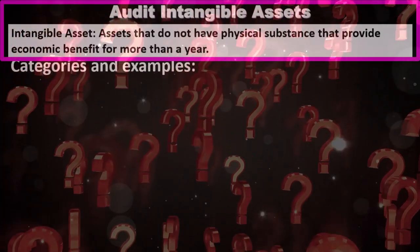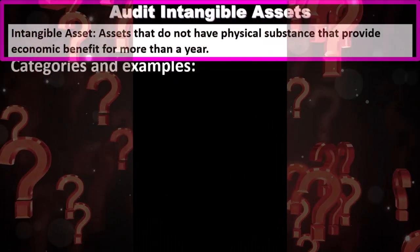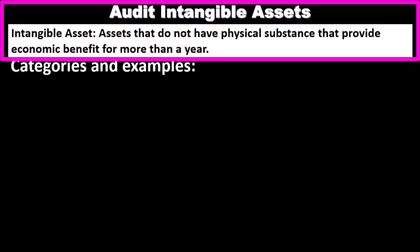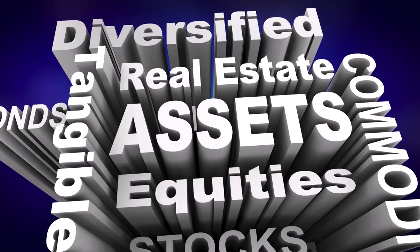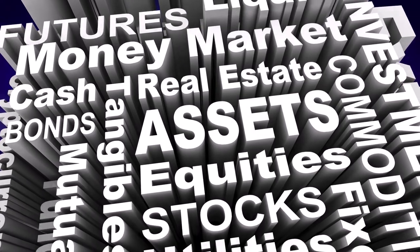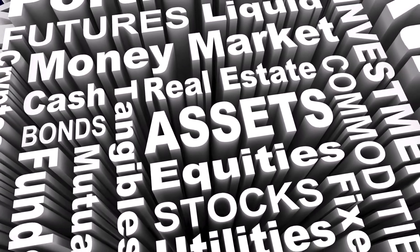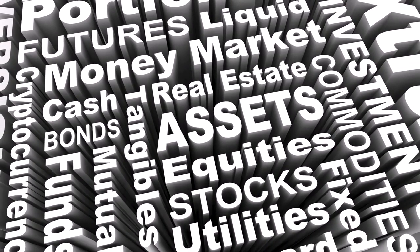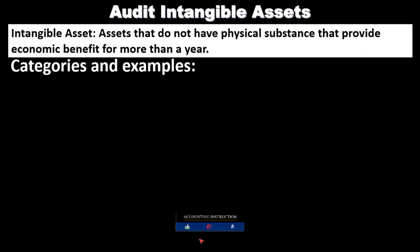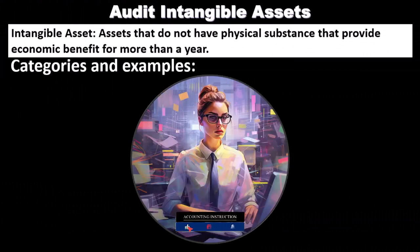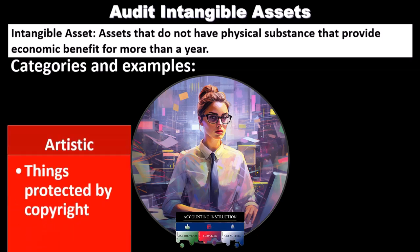Intangible assets are assets that do not have physical substance but provide economic benefit for more than a year. So we're thinking about types of assets — things that you can't touch, you can't kick, you can't feel. However, they do have value and they're going to be providing value for more than a year, and therefore they're going to be assets on the financial statements even though they don't have that physical substance.